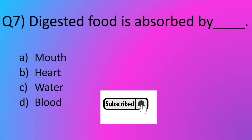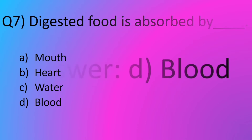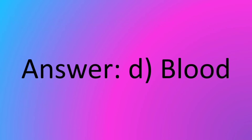Question No. 7: Digestive food is absorbed by dash. Option A: Heart. Option C: Water. Option D: Blood. The answer is Option D: Blood.